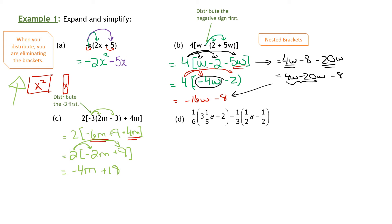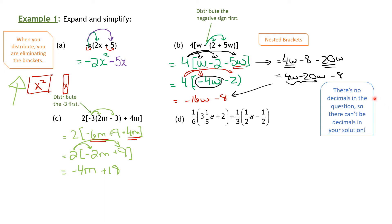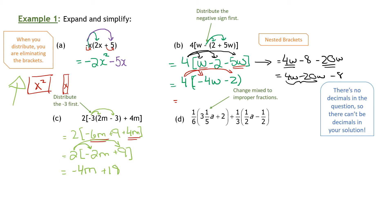Now let's look at Part D — fractions. There are no decimals in the question, so there can't be decimals in your solution. Don't even think about getting out your calculator and doing 1 divided by 6. So what do we do? We're going to look at that 3 and 1 fifth — that's a mixed number and we have to change mixed numbers to improper fractions first. That's our first step.